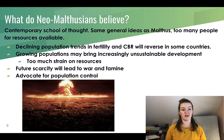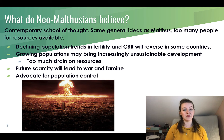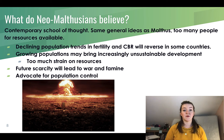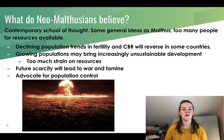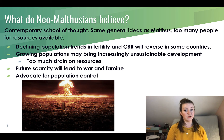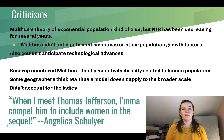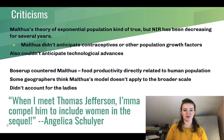Neo-Malthusians think that growing populations, particularly in developing countries, may bring increasingly unsustainable development, placing too much strain on resources. They believe future scarcity will lead to war and famine, and they advocate for population control. Importantly, they're not focused on food like Malthus — they're more focused on other resources like fuel and various types of energy sources.